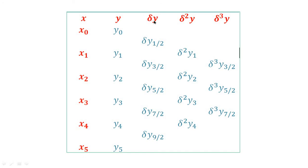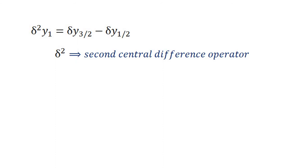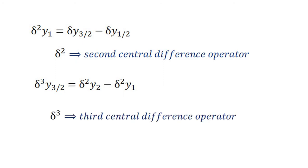We find δy(1/2) = y1 − y0, δy(3/2) = y2 − y1, δy(5/2) = y3 − y2. Then δ²y1 = δy(3/2) − δy(1/2), where δ² is called the second central difference operator. δ³y(3/2) = δ²y2 − δ²y1, where δ³ is called the third central difference operator.